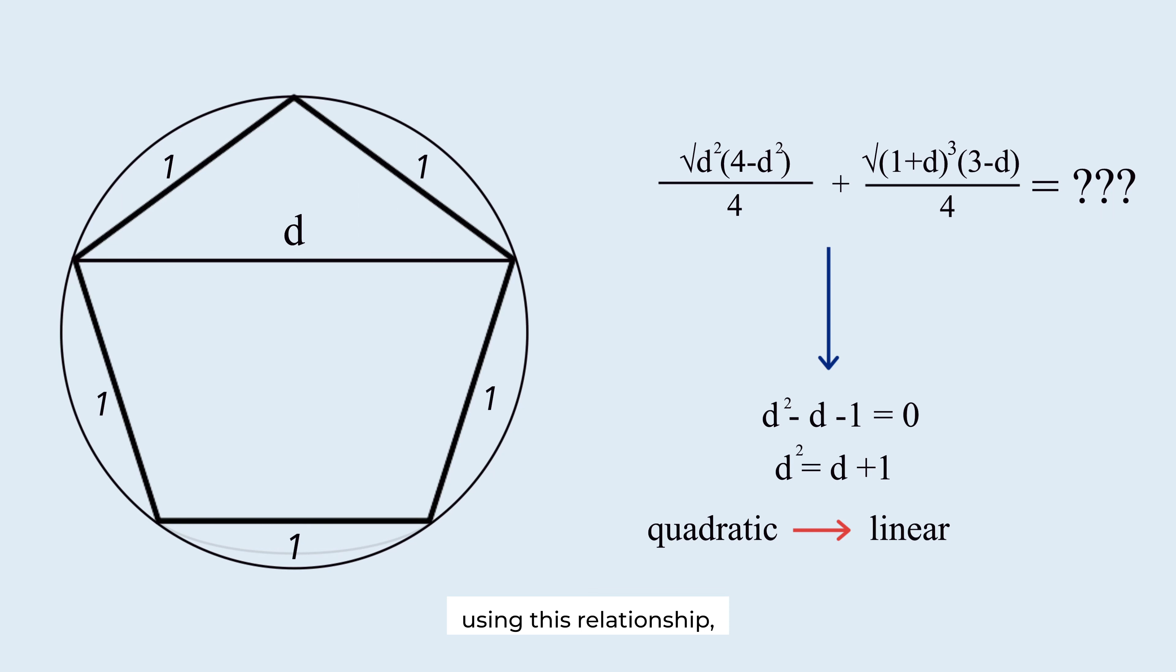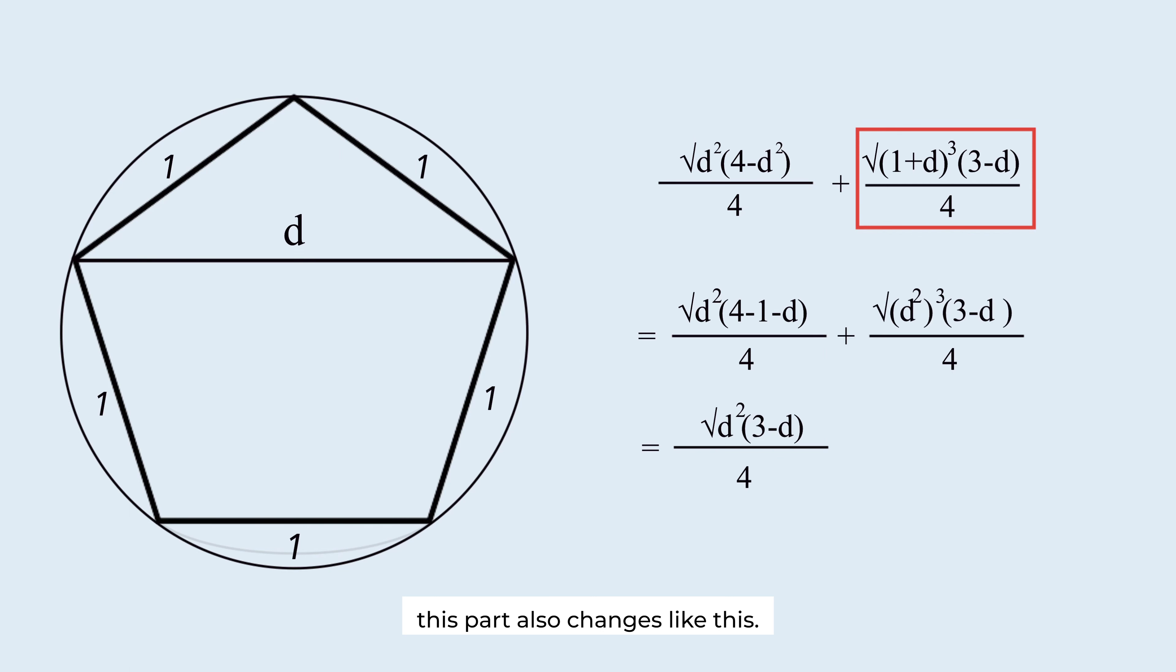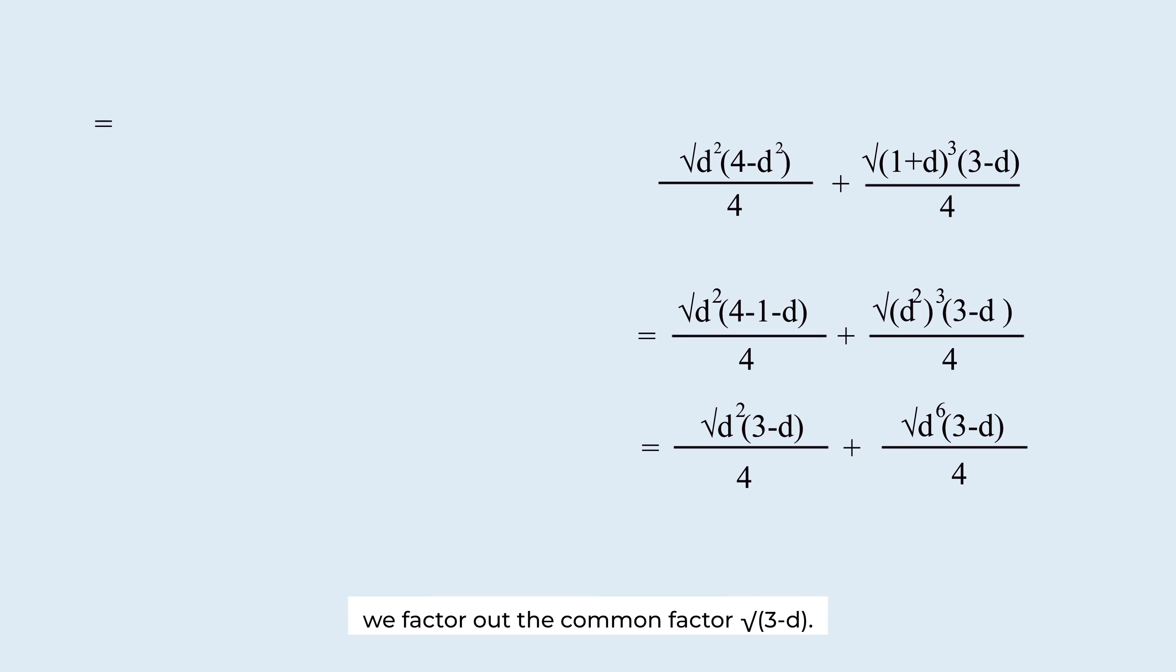Using this relationship, let's simplify the equation first. This part changes like this. This part changes like this. This part also changes like this. In order to combine the two expressions, we transformed so that they have a common factor. We factor out the common factor root 3 minus D.